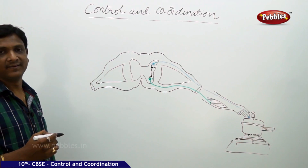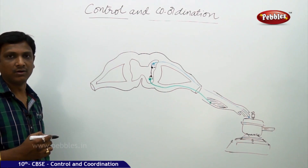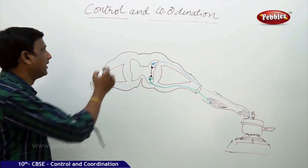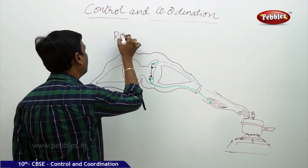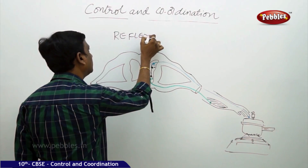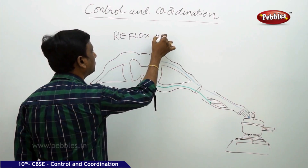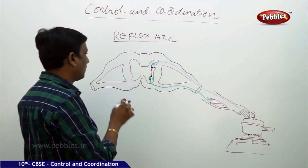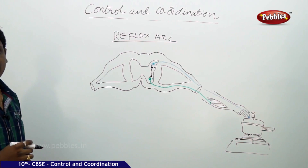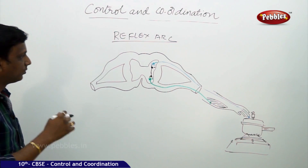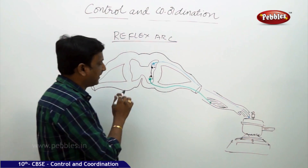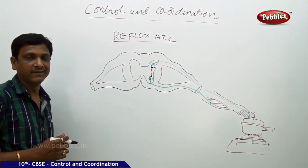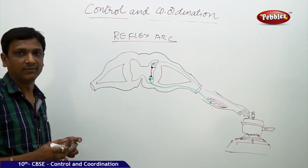We have learned that the unit in the spinal cord which produces the reflex actions is called the reflex arc. We have taken the cross section of the spinal cord in which we are studying the arrangement of neurons and how the reflex action is produced in the spinal cord.